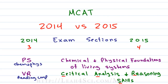The second section on the old exam was verbal reasoning, which was like an advanced reading comprehension section. The new exam has a similar but slightly more difficult section called the Critical Analysis and Reasoning Skills section, or CARS for short.